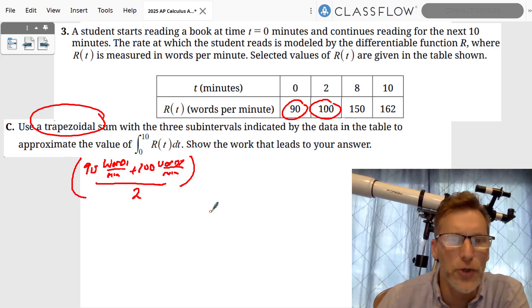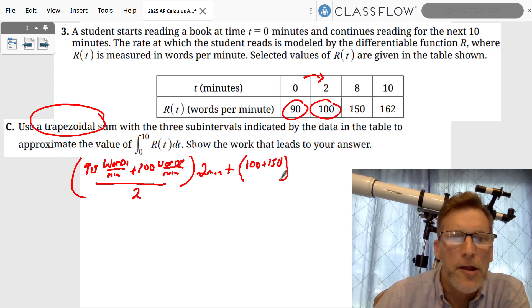We're going to add those two together, and we're going to divide that by 2, and then we're going to multiply by the difference in the x, which is 2 minutes. Then what are we going to do? We're going to do the exact same thing but again, we're going to do 100 plus 150 divided by 2 times the difference, which is 6.